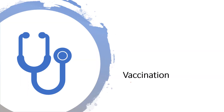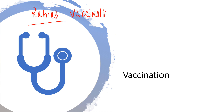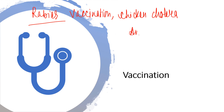Next is vaccination. Louis Pasteur developed the rabies vaccination. At that time, rabies was one of the major diseases and there were a lot of street dogs. Similarly, he accidentally discovered the chicken cholera vaccination, and he also discovered the anthrax vaccination.